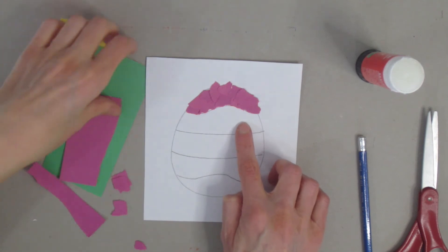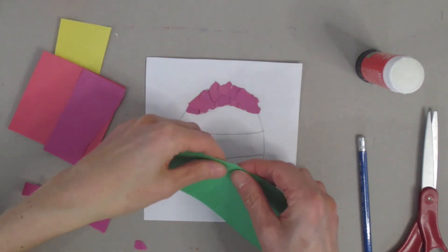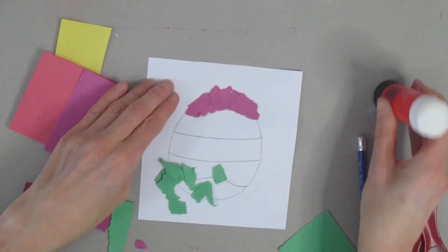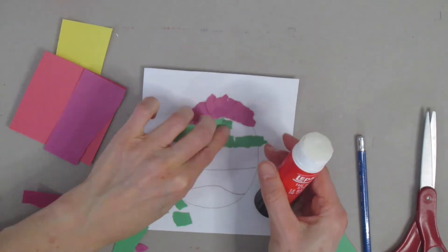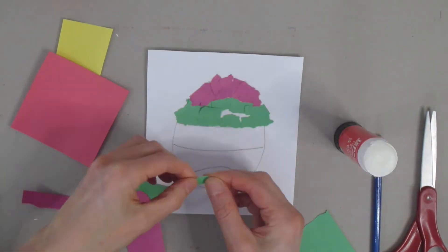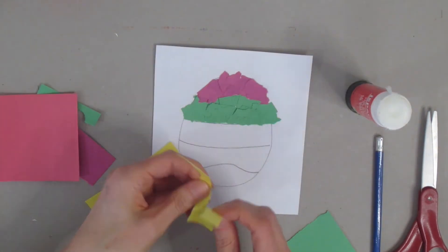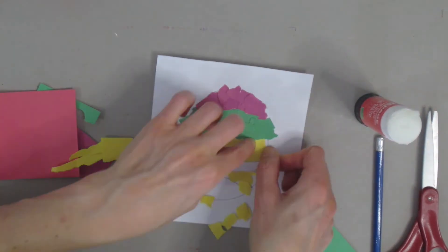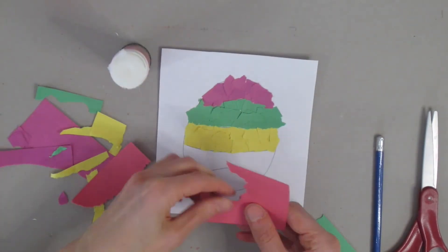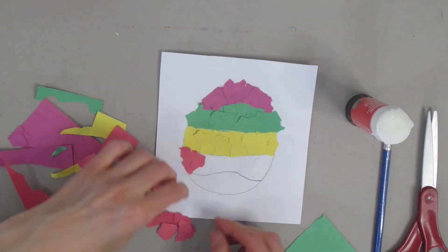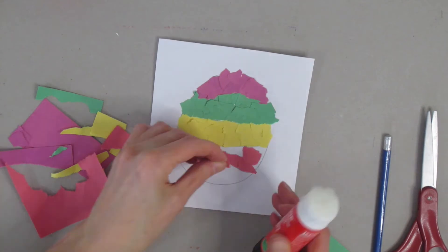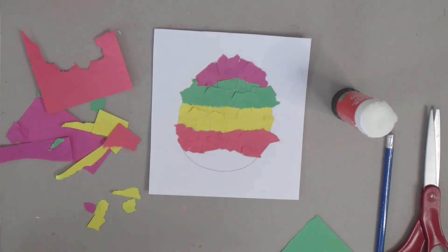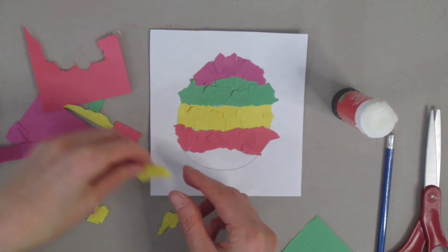Now I want to fill in the second part, so I'm going to choose another color and do the same thing. I'm going to tear my paper and fill that space, and I'm going to continue that throughout my craft. So each time I come to another section of my egg, I'm going to tear the color I'd like and then glue all the little pieces on, not worrying about whether they stick out over the edge because we're going to trim when we're done.